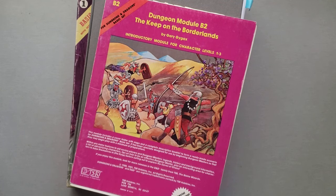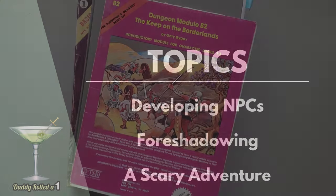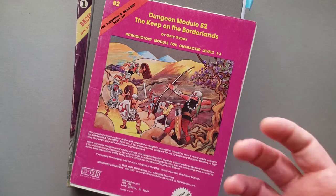Hello there. Welcome back. I'm Martin, and today on Daddy Roll to One, we're going to be talking about how I create NPCs, how I do foreshadowing in my games, and then I'm going to talk a little bit about a scary Halloween-themed game that I ran for my daughter and her group. It was a couple of years ago, but it was right around this time of year. Today is October 30th of 2023, and I thought you guys might enjoy a spooky scenario that you can actually run yourselves — it's available for free, actually, the one that I found that I adapted into my game.